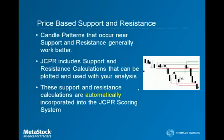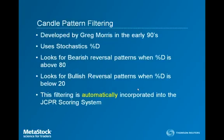In addition to the statistics, JCPR uses price-based support and resistance in its calculations. Candle patterns that occur near support and resistance generally work better. JCPR includes an indicator for support and resistance calculations that can be plotted and used with your own analysis, but it's automatically incorporated into the JCPR scoring system. Another technique used for JCPR scoring is called candle pattern filtering, developed by Greg Morris in the early 1990s using stochastic %D. We look for bearish reversal patterns only when %D is above 80, and bullish reversal patterns only when %D is below 20. This filtering method is automatically incorporated into the JCPR scoring system.